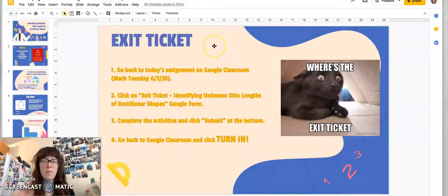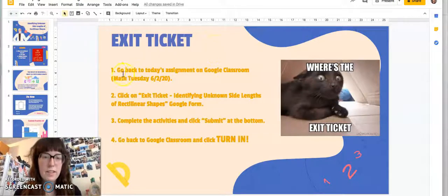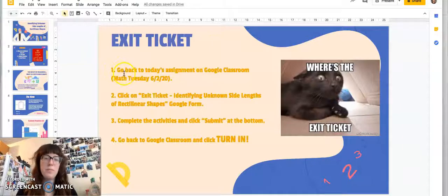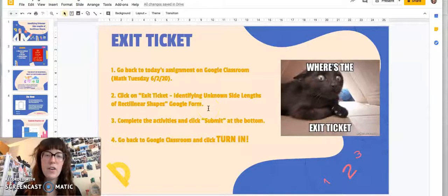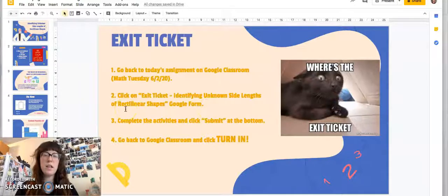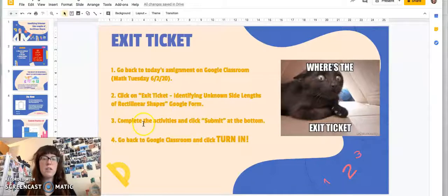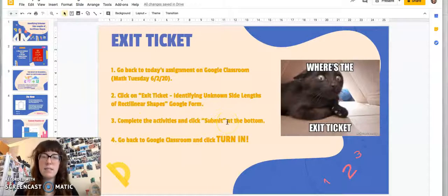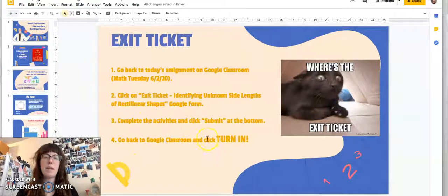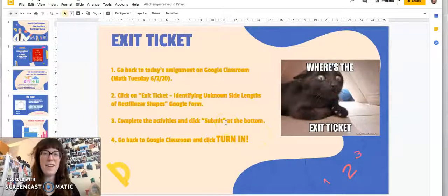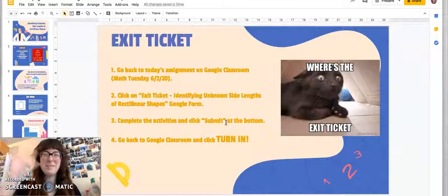It's time for our exit ticket. So you're going to go back to today's assignment on Google Classroom, which is under Math Tuesday, June 2nd. You're going to click on Exit Ticket, Identifying Unknown Side Lengths of Rectilinear Shapes, which is a Google Form. You'll complete the activities and click Submit at the bottom, and then you'll go back to Google Classroom and click Turn In. And that's it for today, friends. I will see you soon. Have a great day!